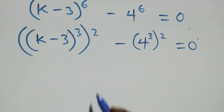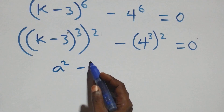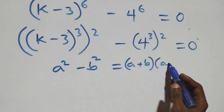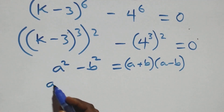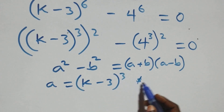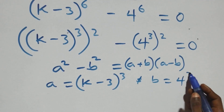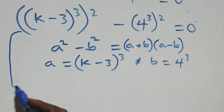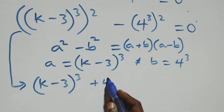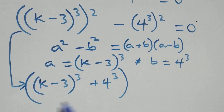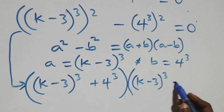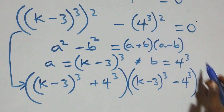This follows from the difference of two squares: a squared minus b squared is the same as (a + b)(a - b). Here, a stands for (k minus 3) all raised to power 3, and b stands for 4 raised to power 3. So we have [(k-3)^3 + 4^3] times [(k-3)^3 - 4^3] equals zero.